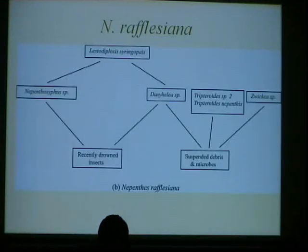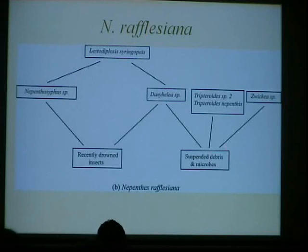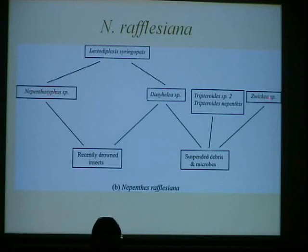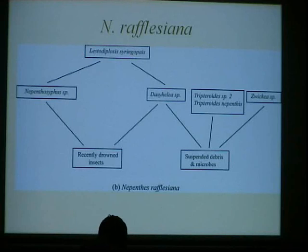This is a similar food web from Nepenthes lowii pitchers. You can see that it's a lot simpler — fewer species: only two mosquitoes, one midge, one fly, one mite, and one predator at the top. So different Nepenthes species have different food webs.